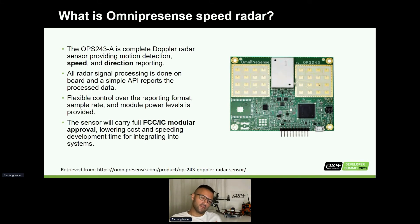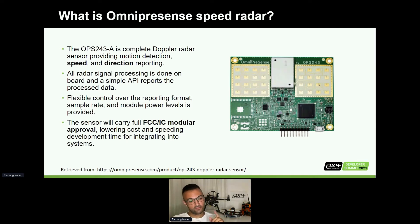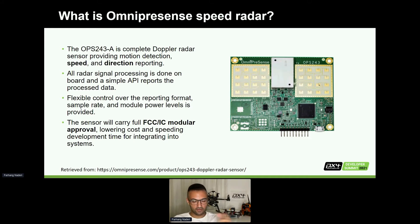What is the OPS243A? The sensor is a Doppler velocity sensor that can measure speed and direction at the same time. This model is only able to measure speed and direction, but there is another model — the 243C — which can also measure range in addition to speed. Here we have the 243A, which is the simpler one and can only measure speed.